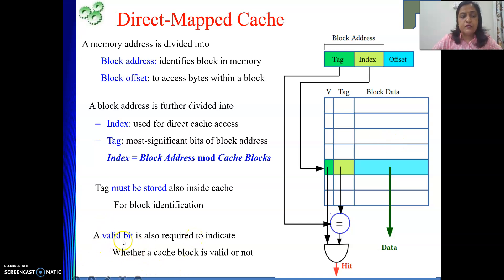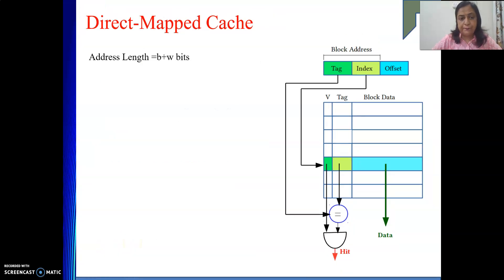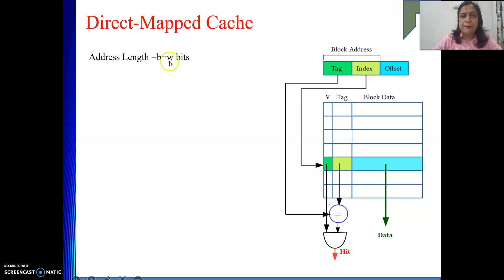The significance of the valid bit — what it represents exactly — will be discussed shortly. Now, suppose my main memory address length is B plus W bits. The B part indicates the block address, and W indicates the offset.